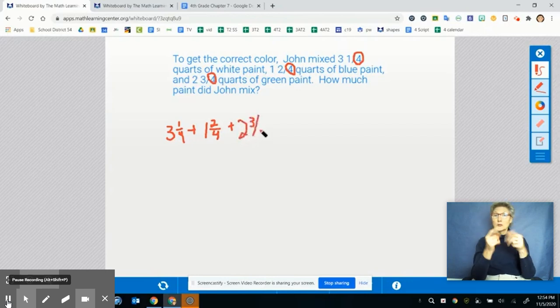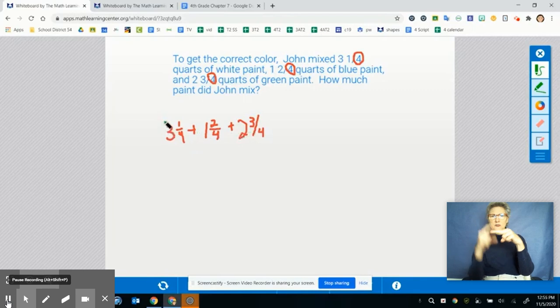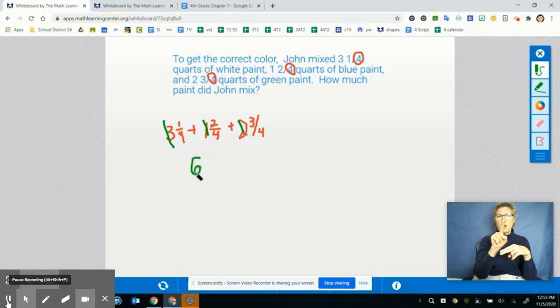So the first thing that we want to do is let's just go ahead and add up our whole numbers so that we can get that part out of the way. I'm going to add three plus one is four, and four plus two is six. So when I add those up, I'm going to get six.